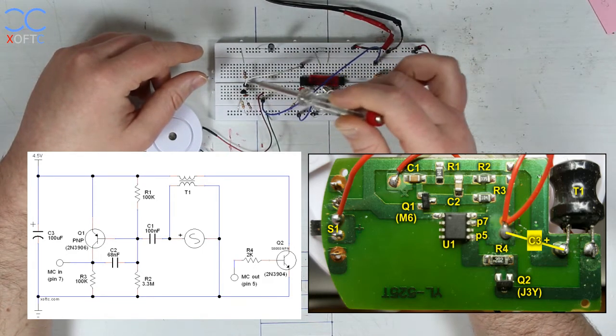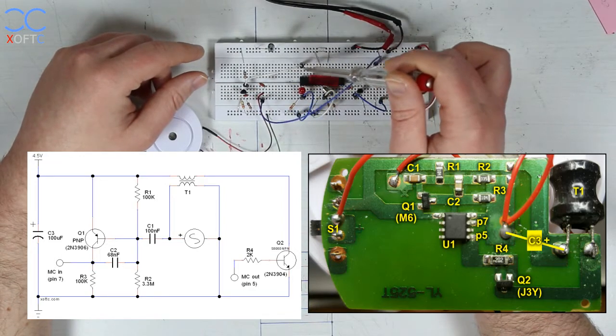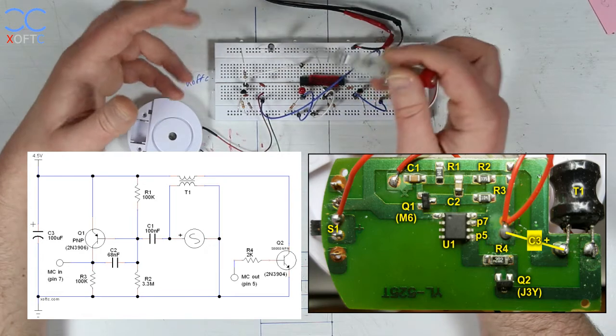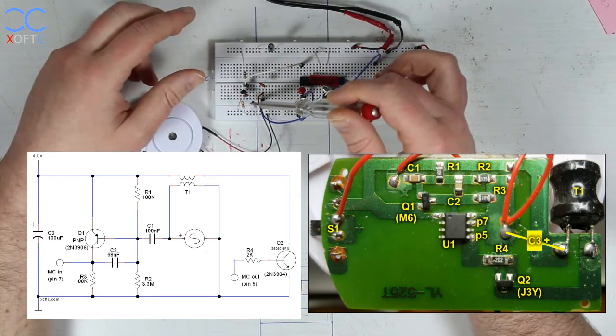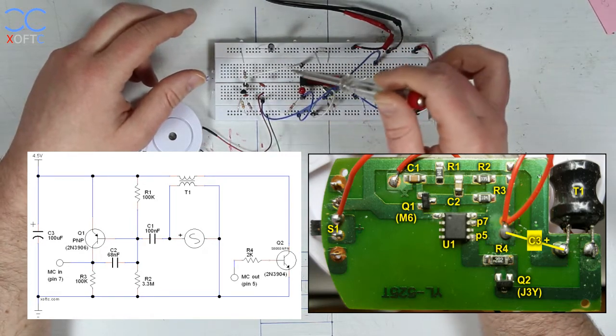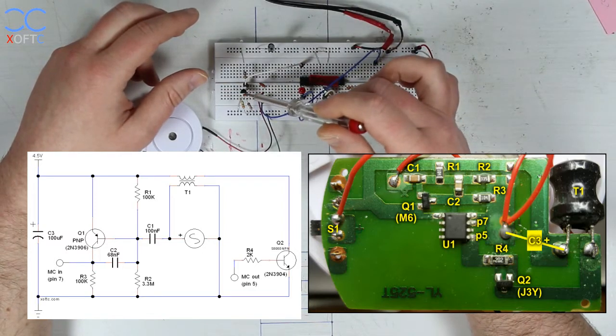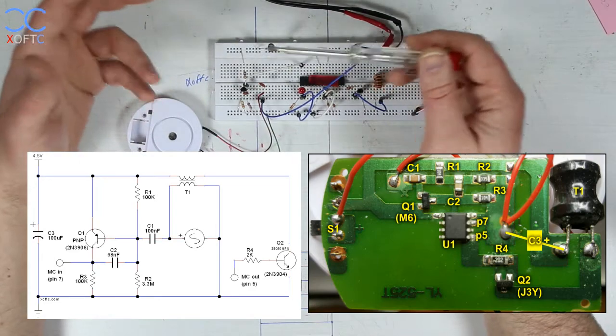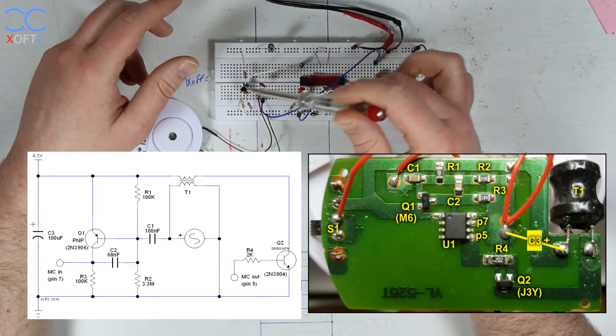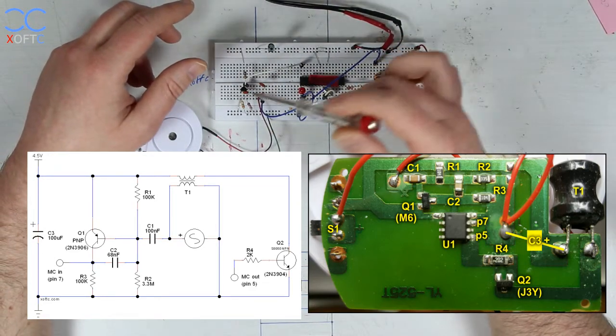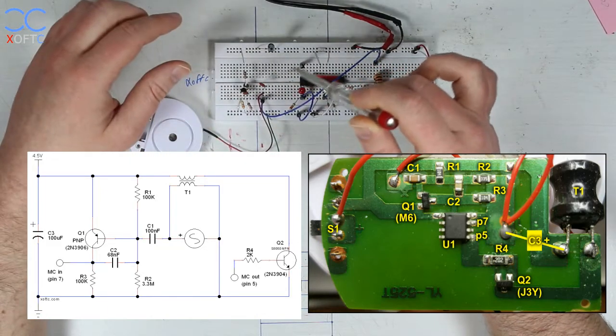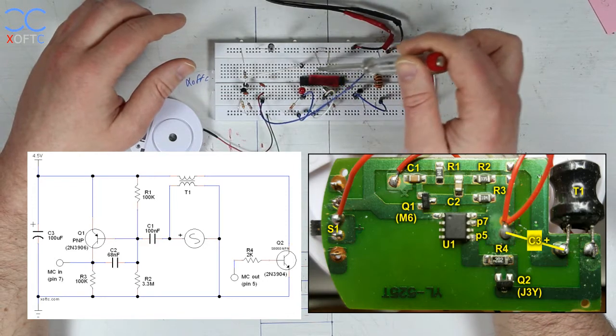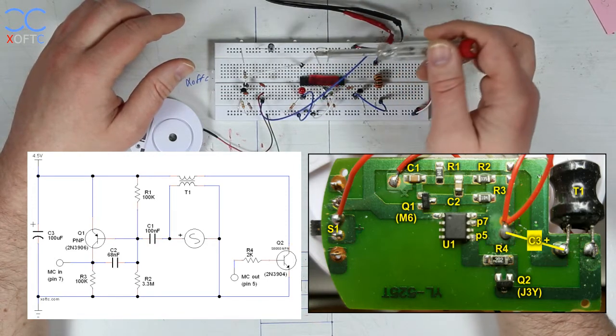R3, again 100K, is used to pull down the pin on the microcontroller. I just stuck to the original circuit but it can be lower than that. I don't think you need 100K on it. And here in the middle, a 68 nanofarad capacitor. Again I made a guess and it works okay.